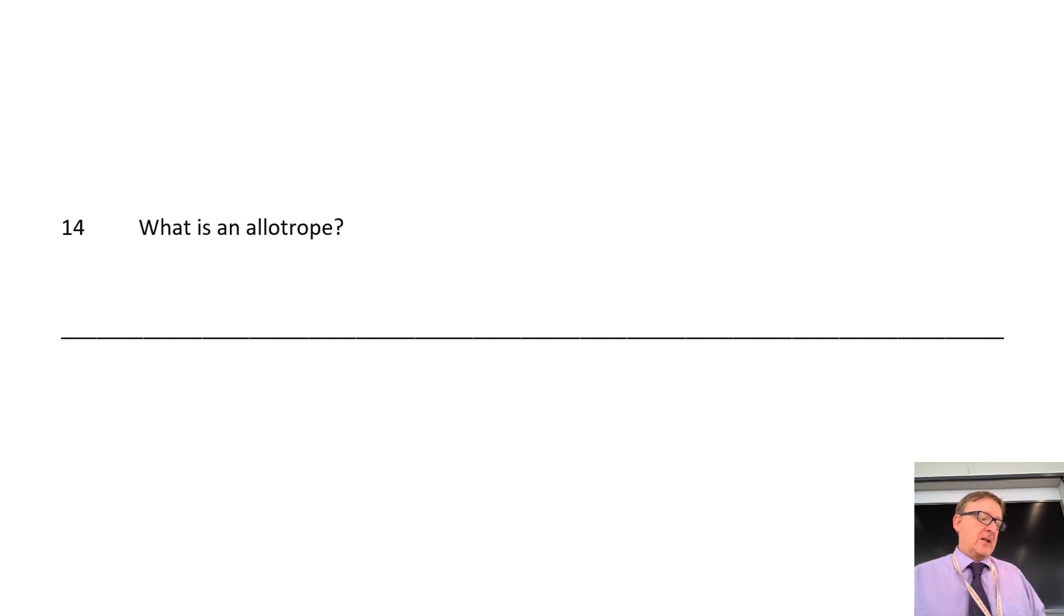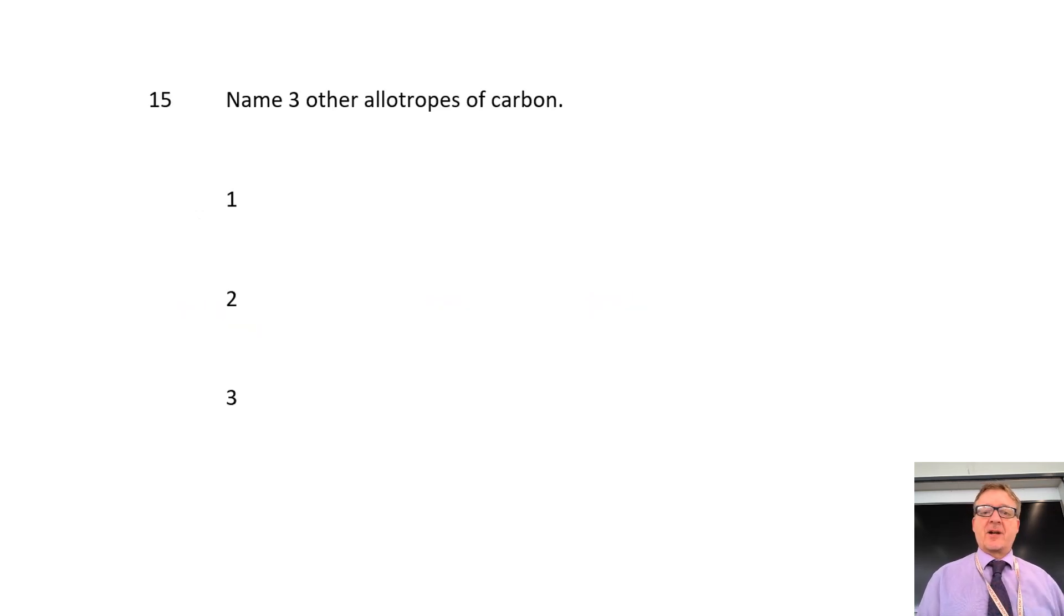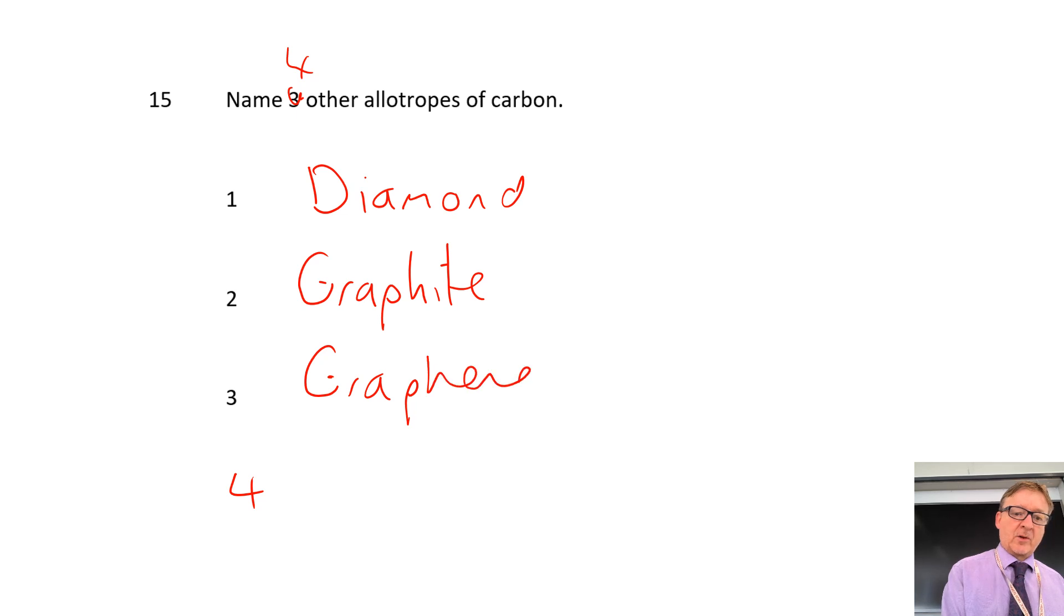What is an allotrope? An allotrope is a different form of the same element. And then the examples are, it says they're named three other allotropes of carbon. What I'm going to do is, I'm going to be very sneaky, I'm going to add in a four. Because what we've got, the allotropes, there's four basic allotropes of carbon. We've got diamond, we've got graphite, we've got graphene, which is one layer of graphite. And then we've also got something called fullerenes.